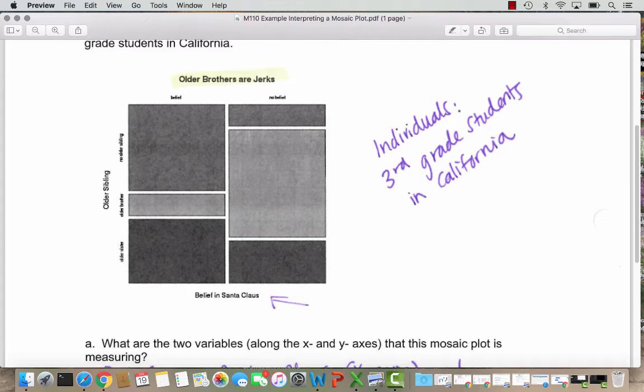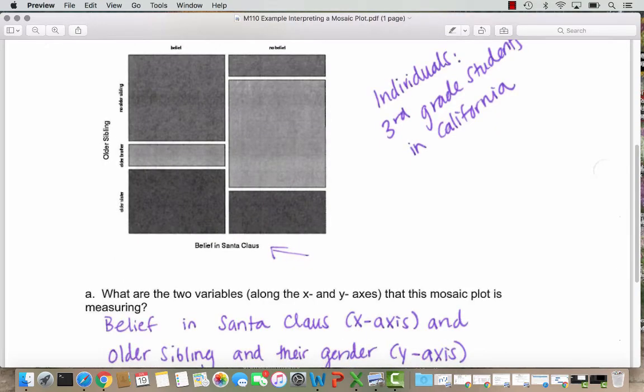The y-axis is measuring whether the students have an older sibling. So we see they're measuring the older sibling and then their gender. So the choices here are no older sibling, older brother, and older sister.